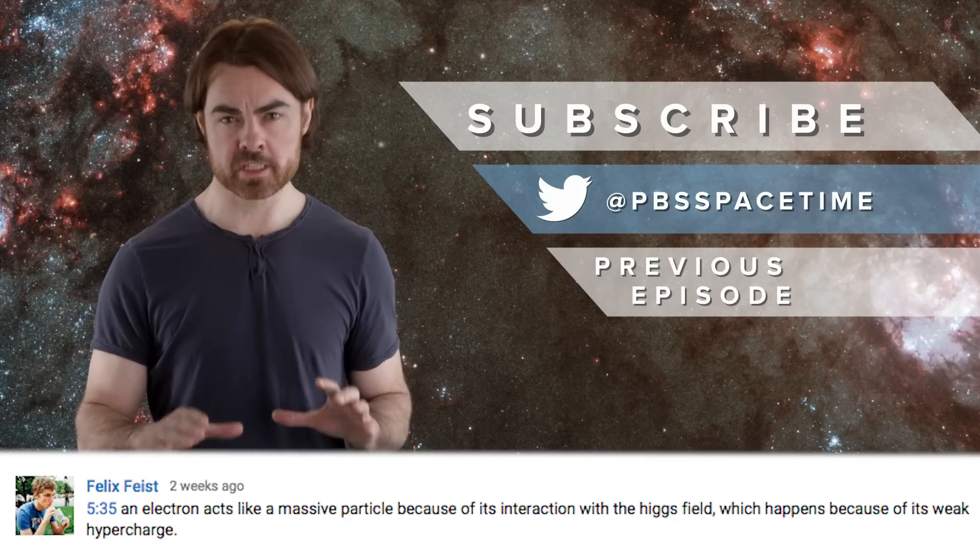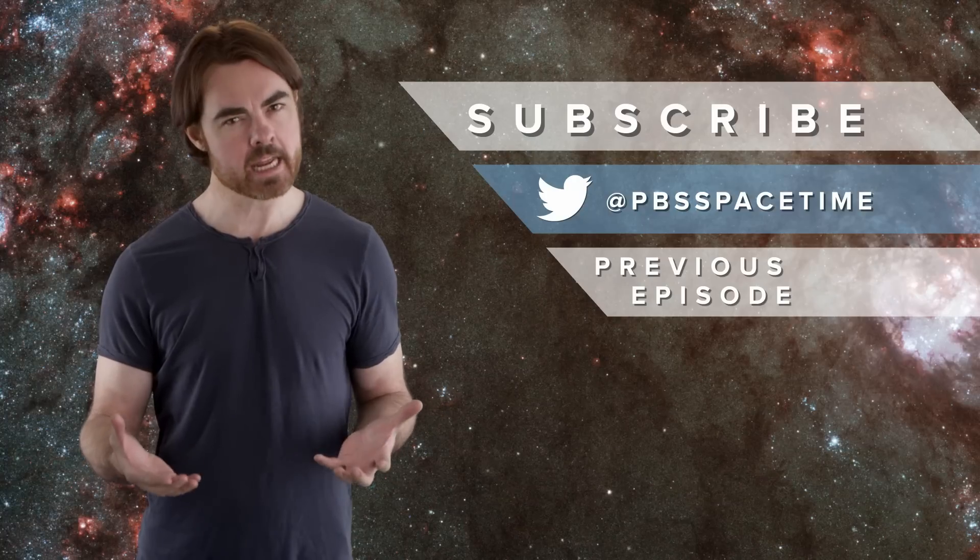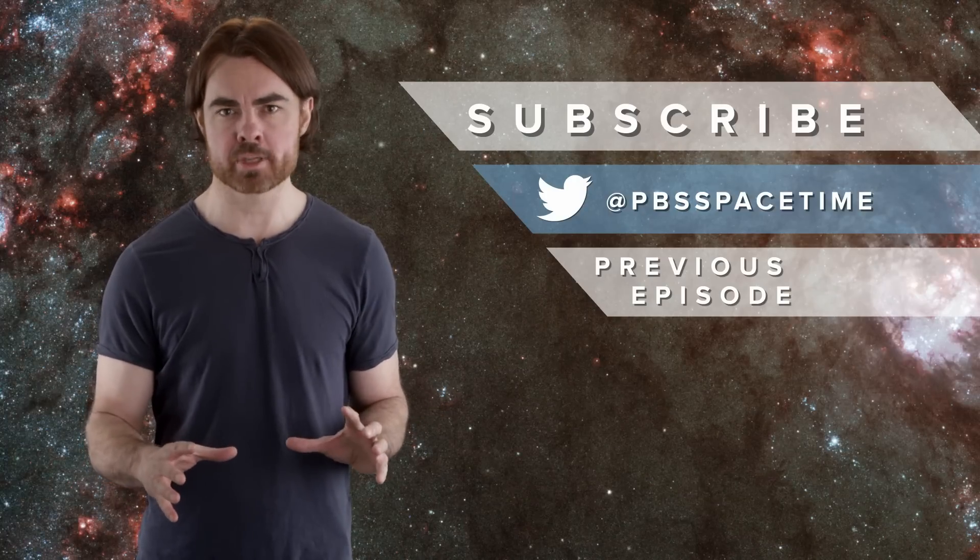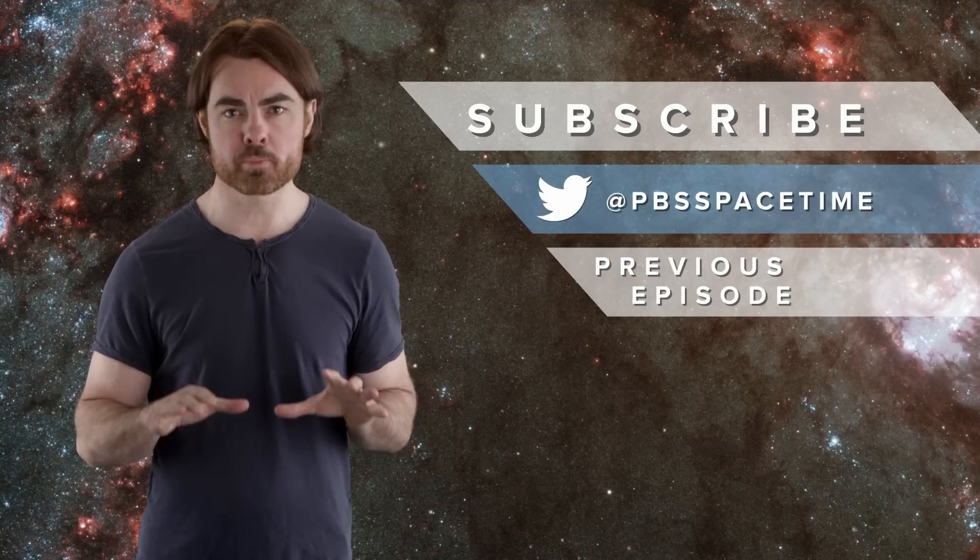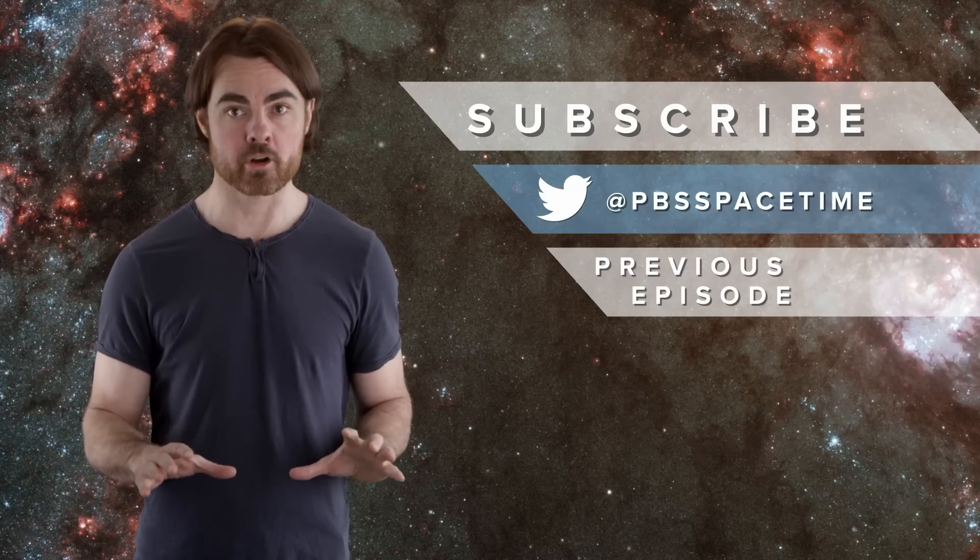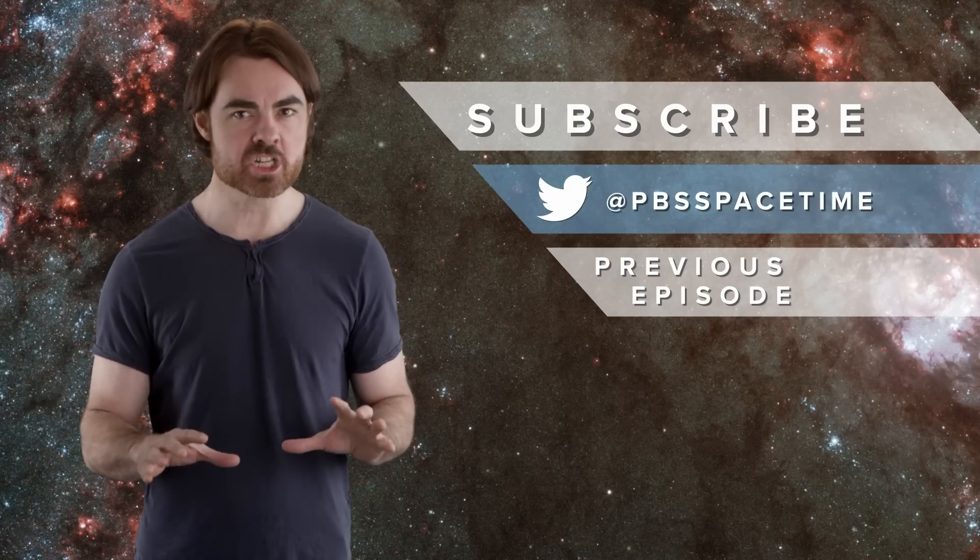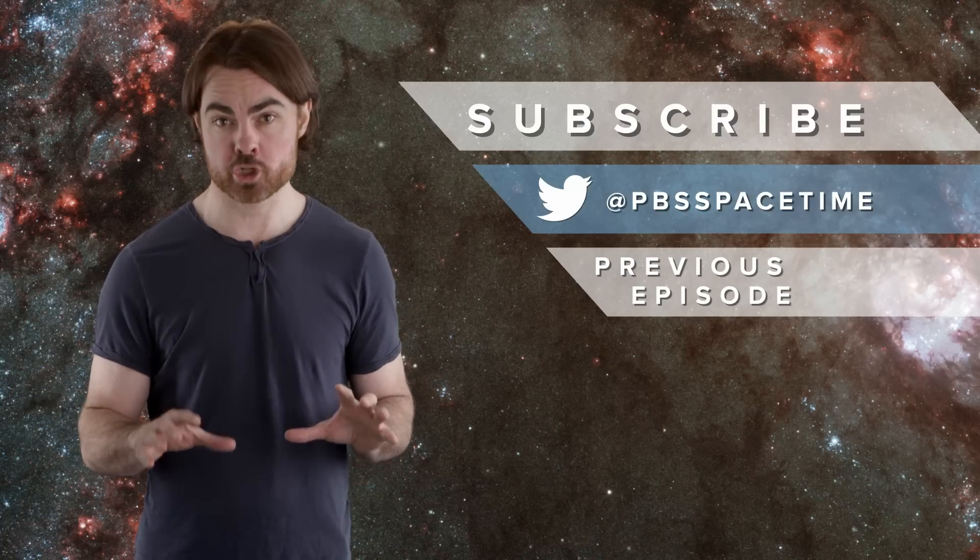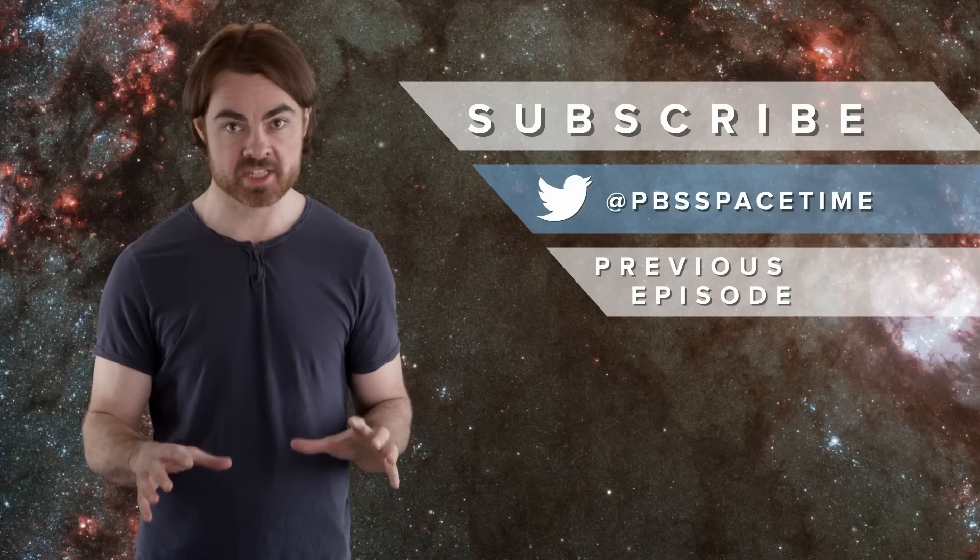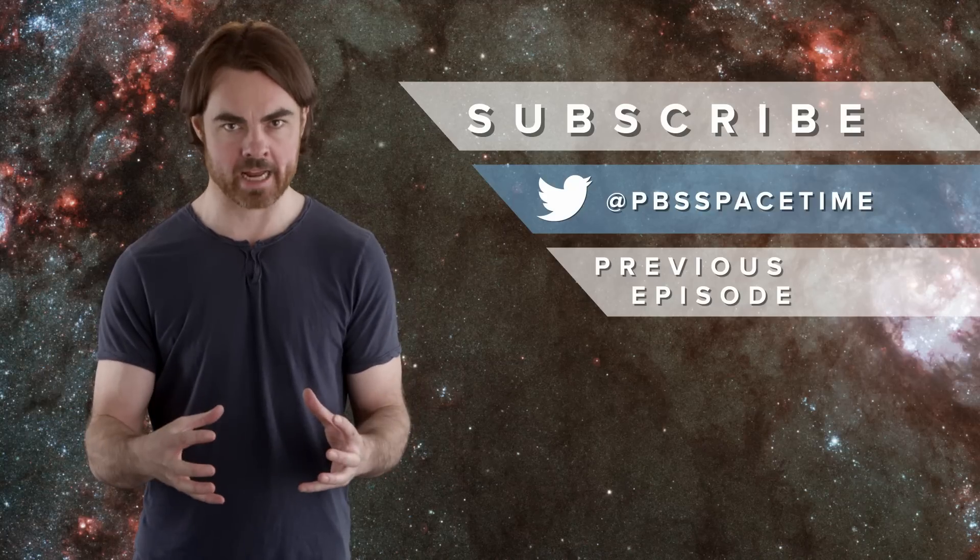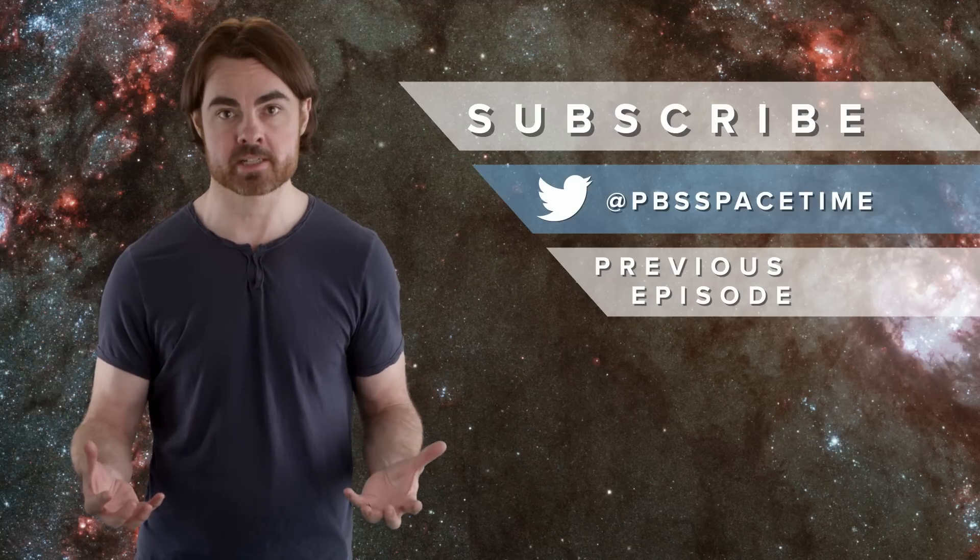Felix Feiss points out that given that the right-handed electron doesn't have weak hypercharge, shouldn't it be massless? Well, yes and no. The right-handed electron can interact with the Higgs field by picking up some weak hypercharge. In fact, this flipping back and forth between handedness is probably more accurately thought of as the electron being both right- and left-handed at the same time, because the interchange happens on timescales shorter than the Planck time. There's a quantum blur surrounding the current state of the electron. It's really the composite particle that has mass. The naked left- or right-handed electron is massless.